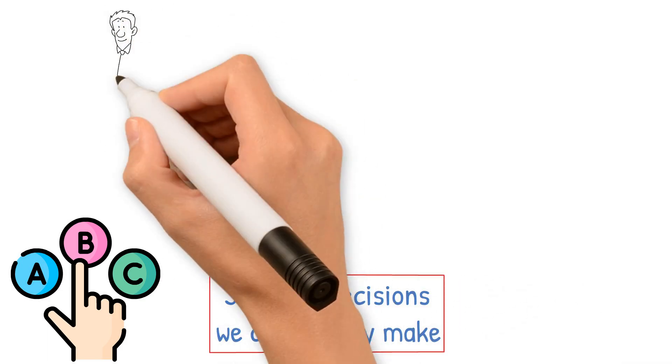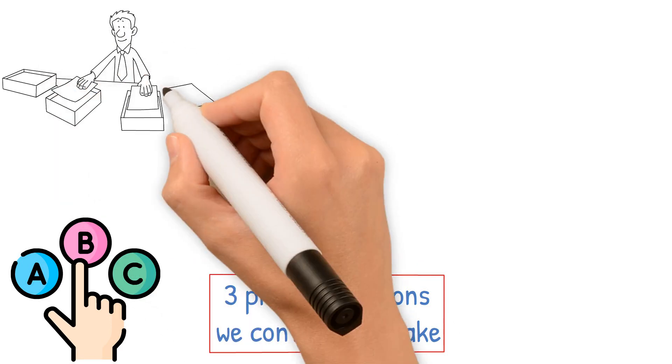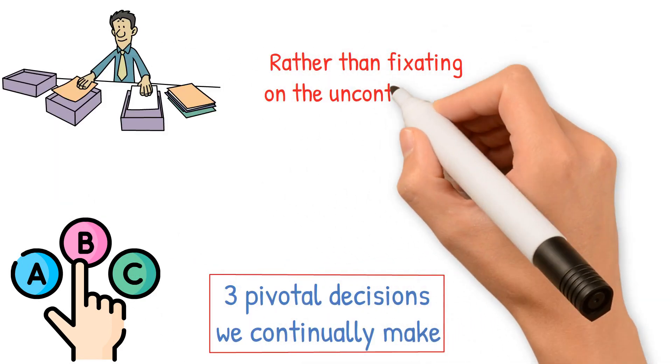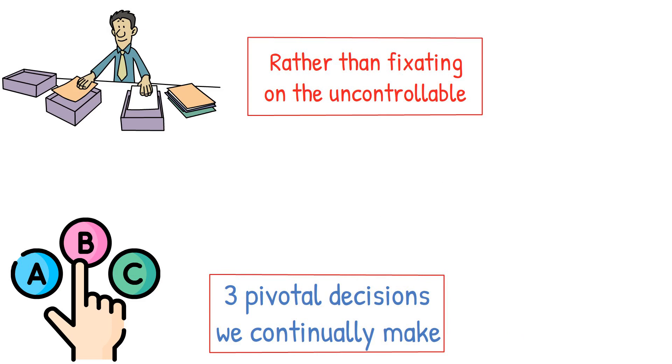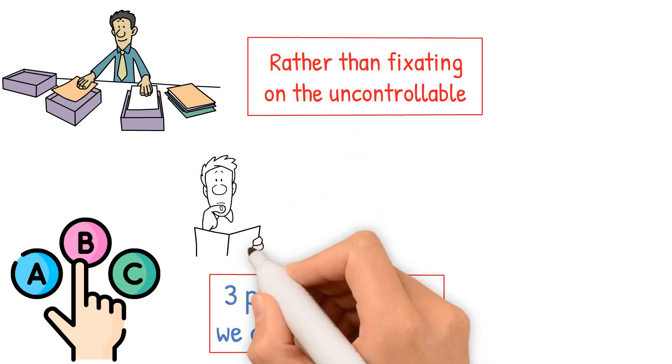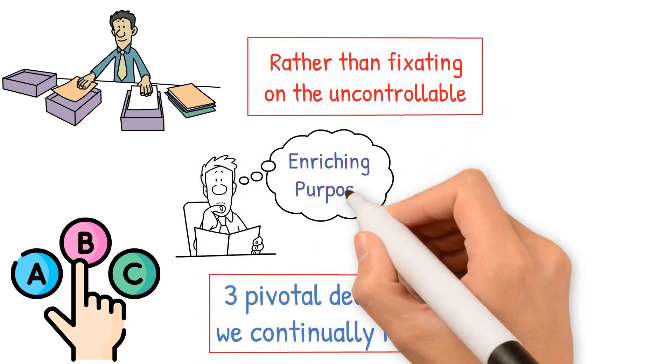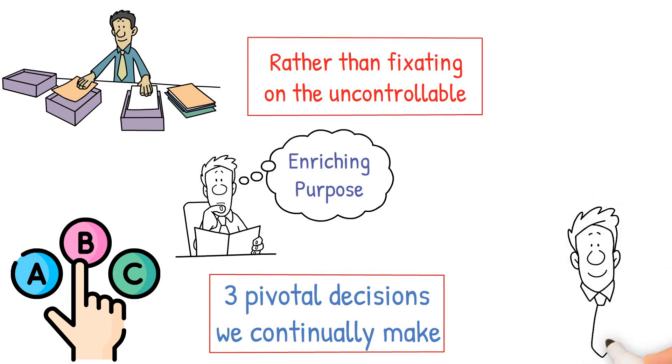The first decision emphasizes concentrating on achievable objectives and what's within our control, rather than fixating on the uncontrollable. The subsequent decision encourages us to seek an enriching purpose. And the final one urges forward thinking and meticulous planning for our future.